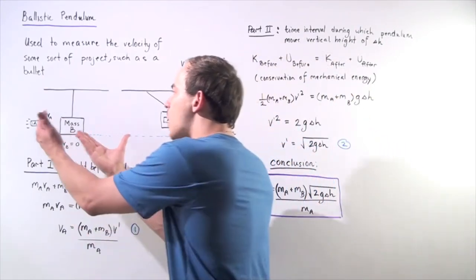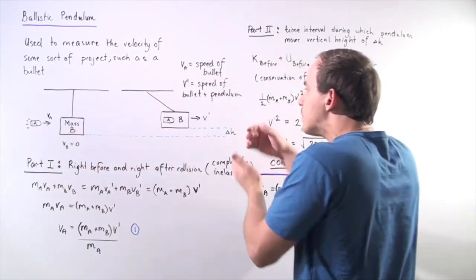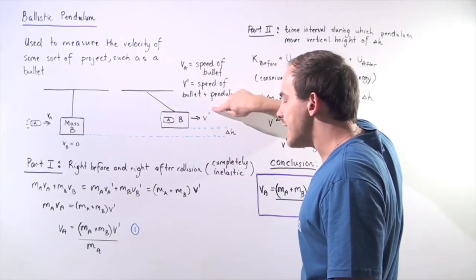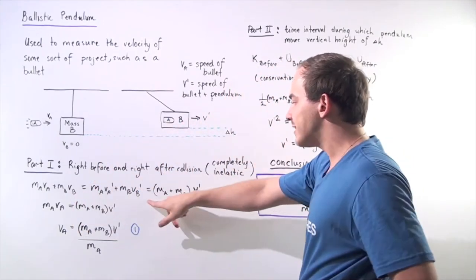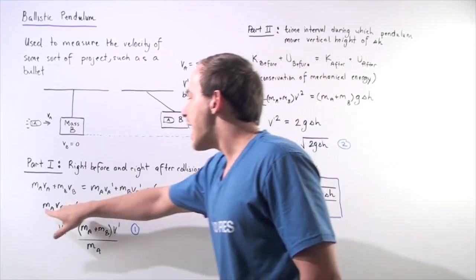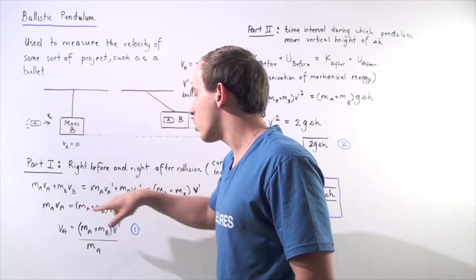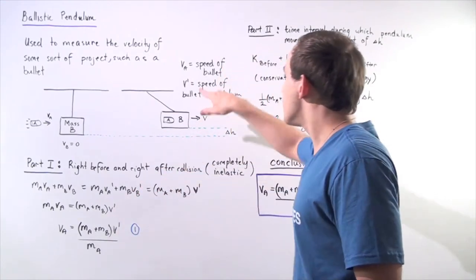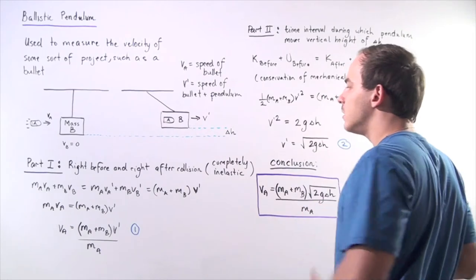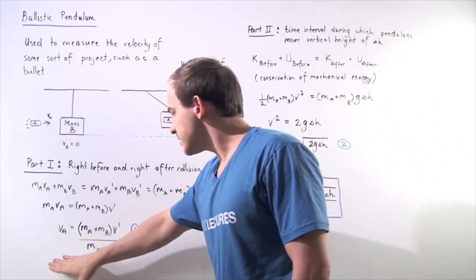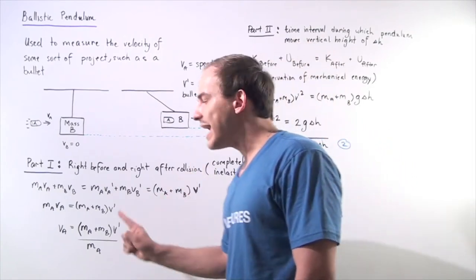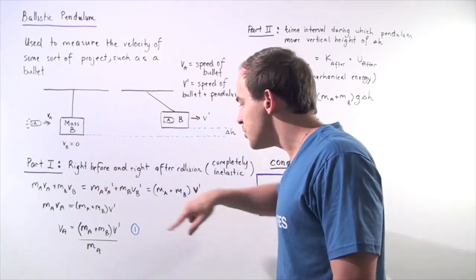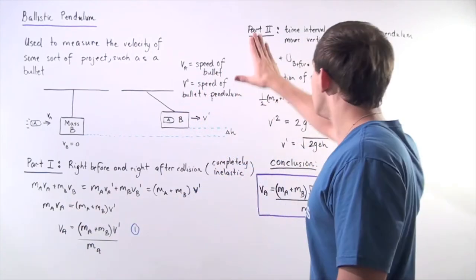Because our two objects stick together and move away with the same exact velocity v prime, we can replace va prime and vb prime with simply v prime, and we get the following result. Mass of the bullet times va equals the sum of the two masses multiplied by v prime — the speed of the bullet plus the block right after the collision. Notice, however, this is not the end because we have two unknowns: va, which is what we're looking for, and v prime. So let's call this equation one and move to part two.